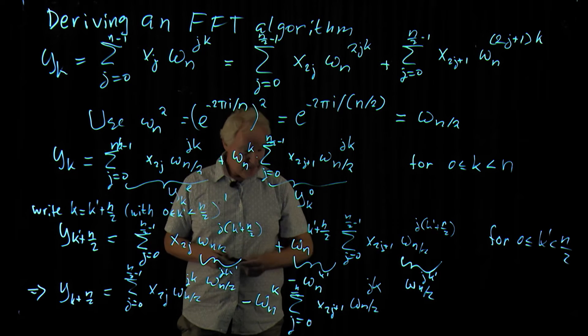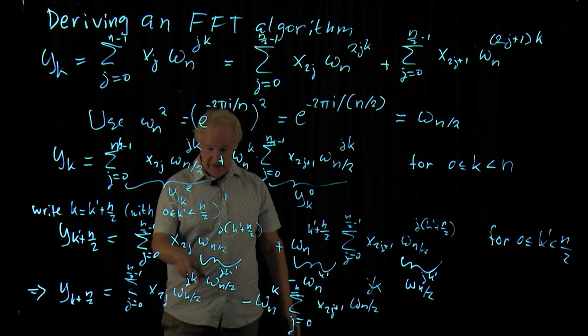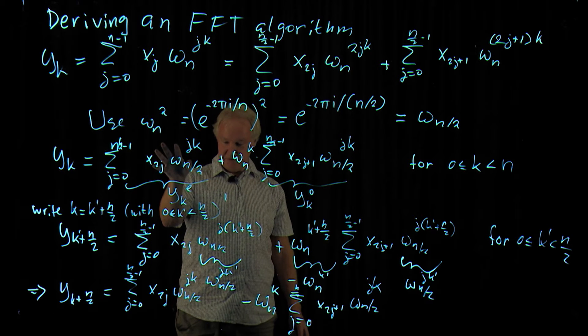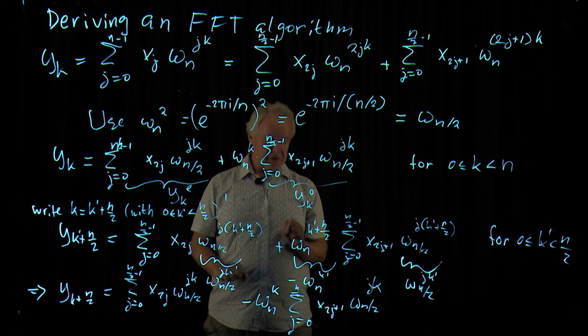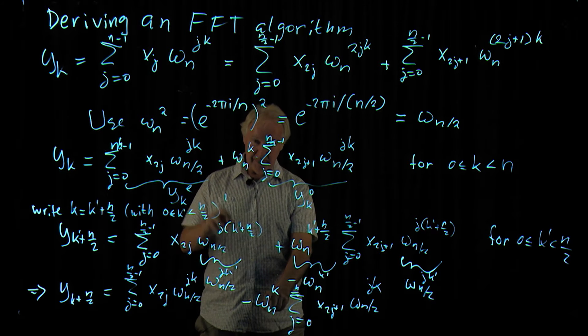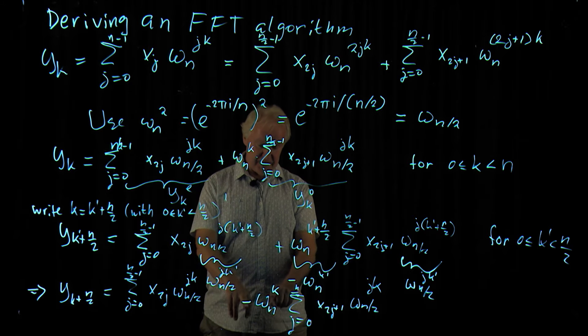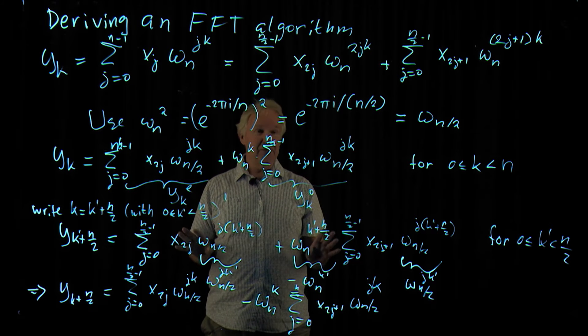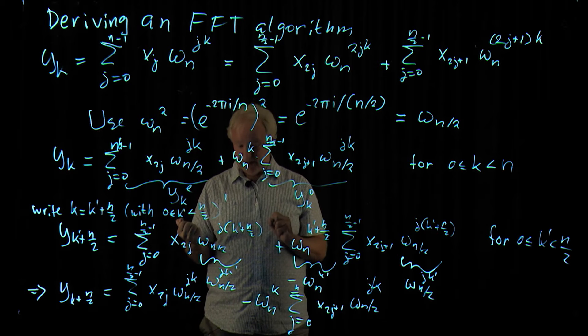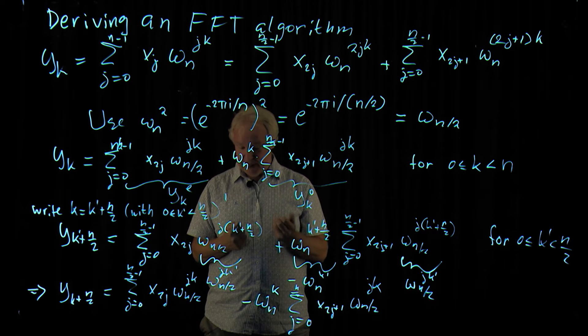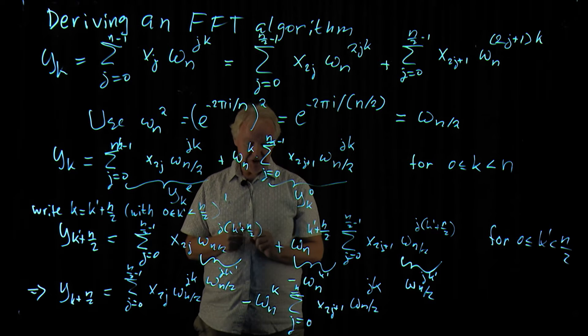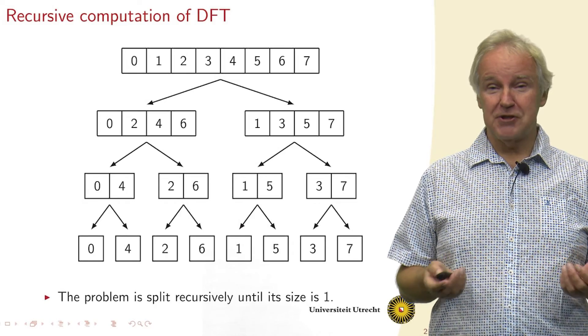So we see that this term we have computed already. This term we've also computed already. The factor is the same. Only this plus became a minus. And that's why we don't have to compute these sums again. We save computations. The only difference is that instead of adding them here, we subtract them here.